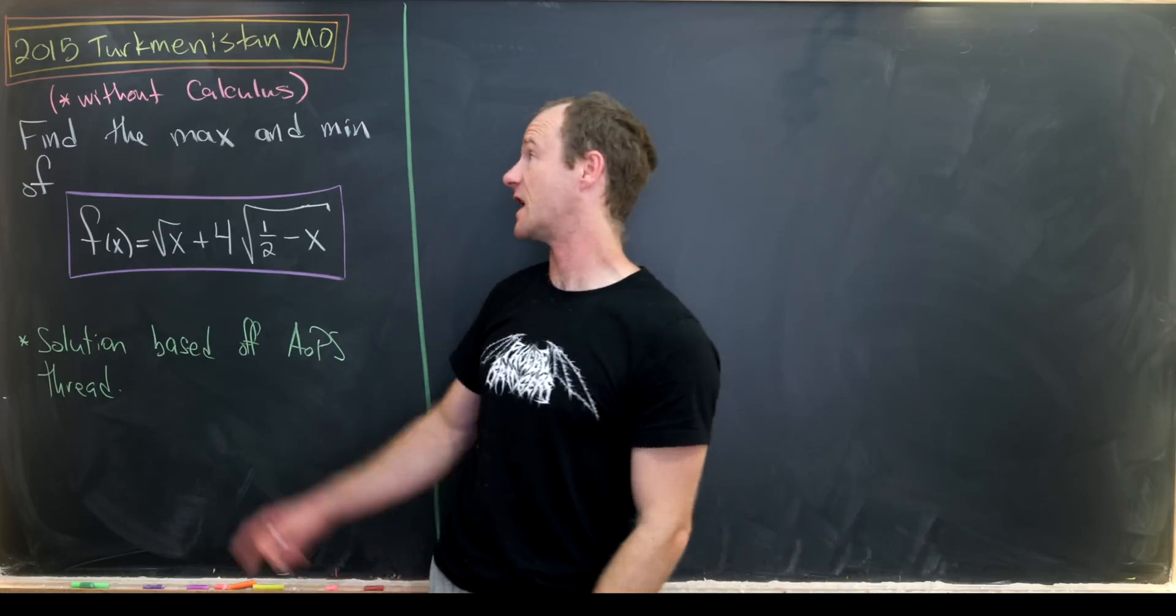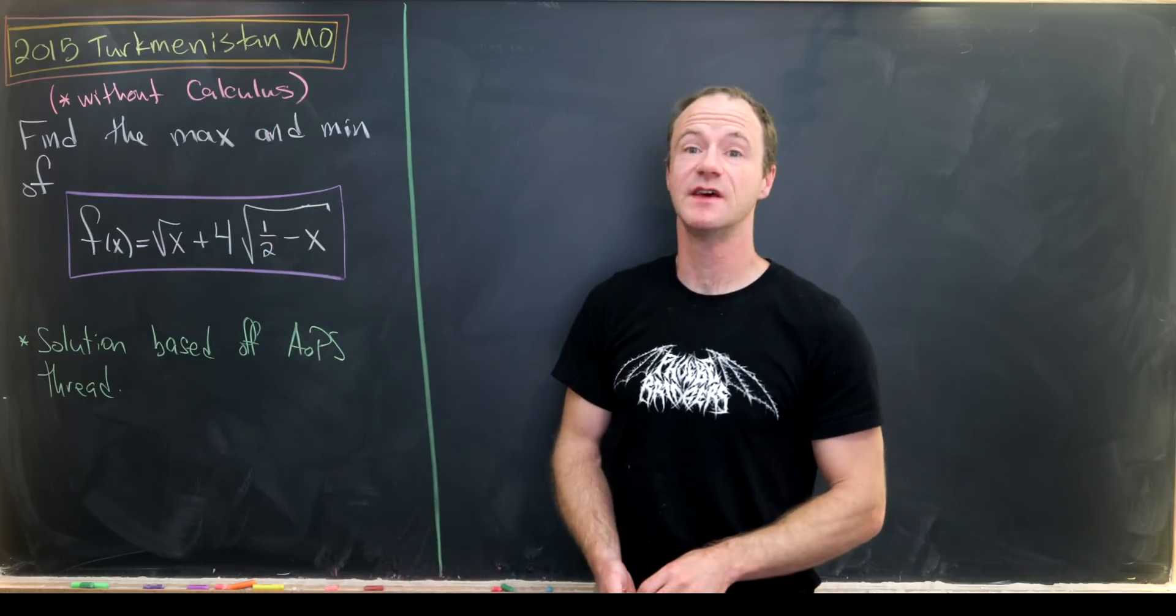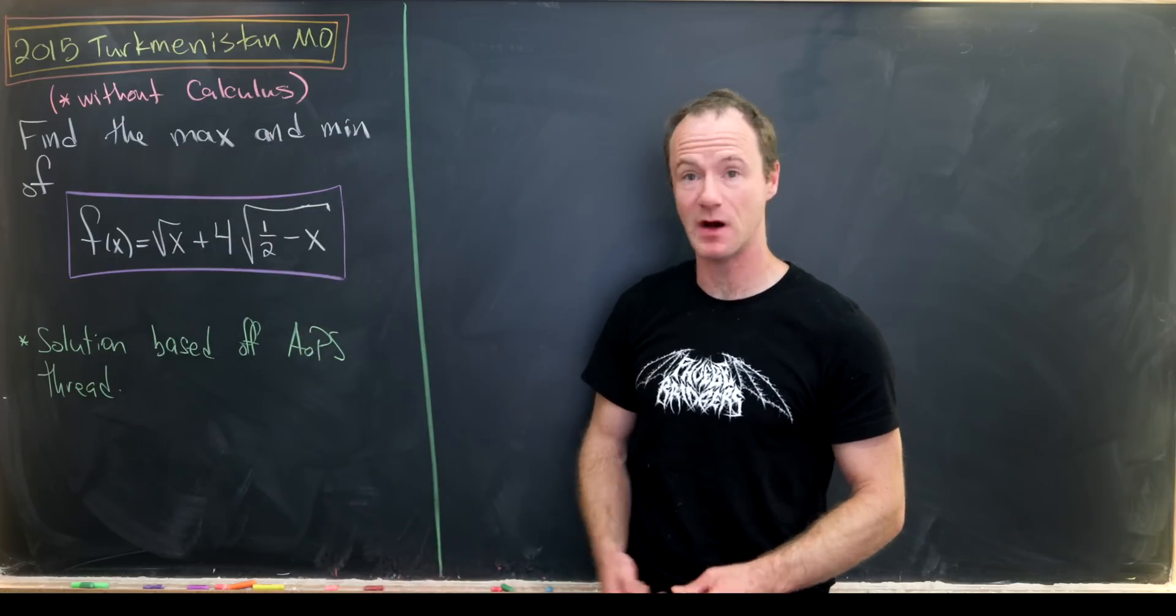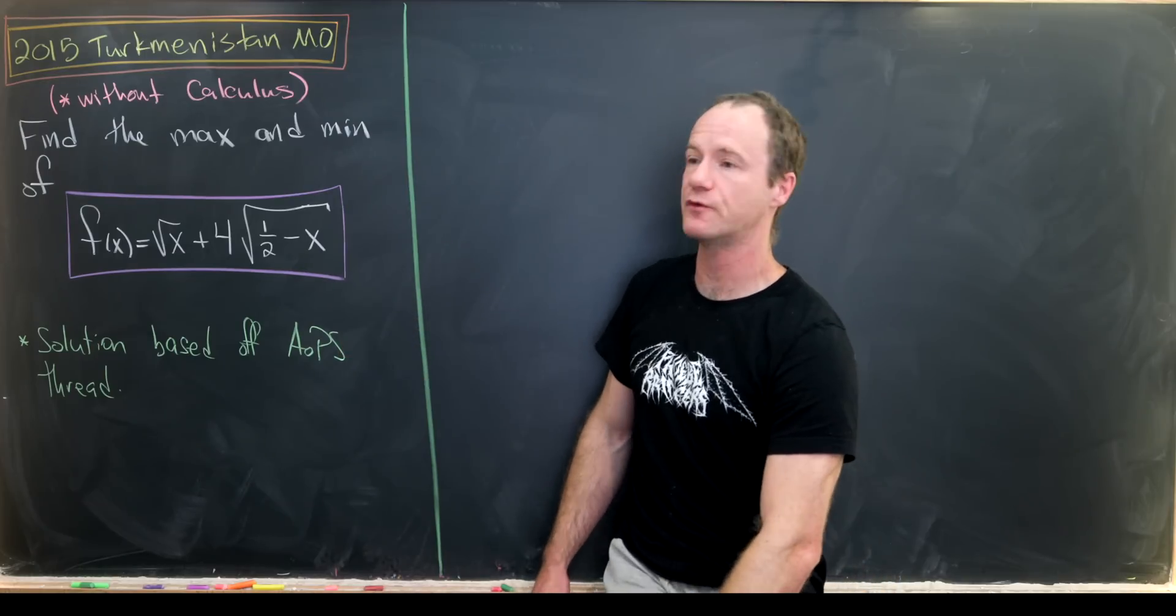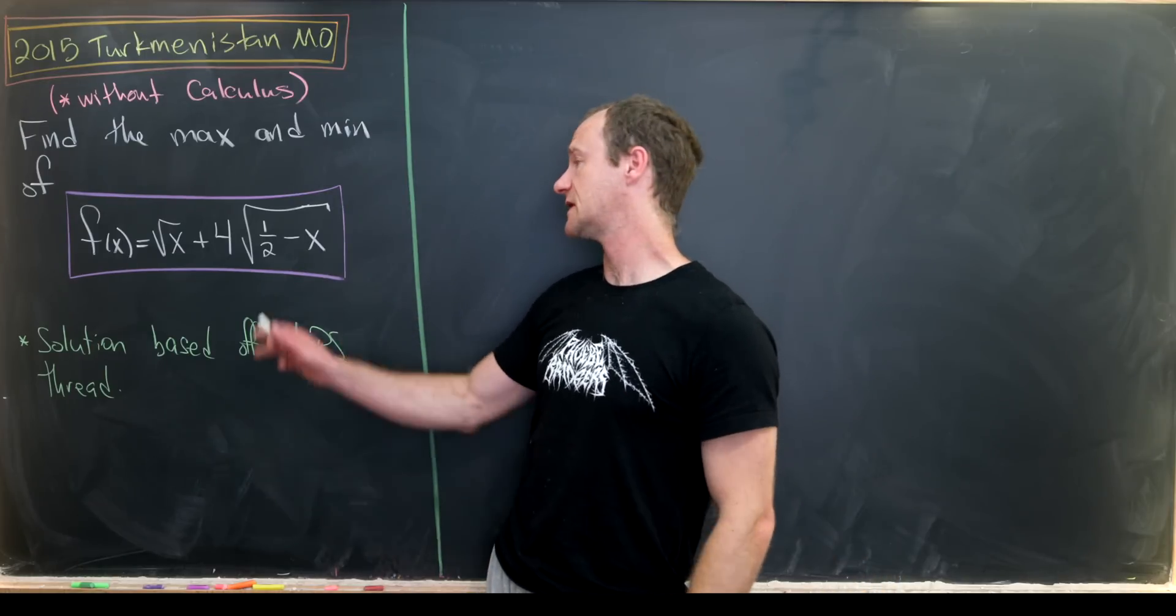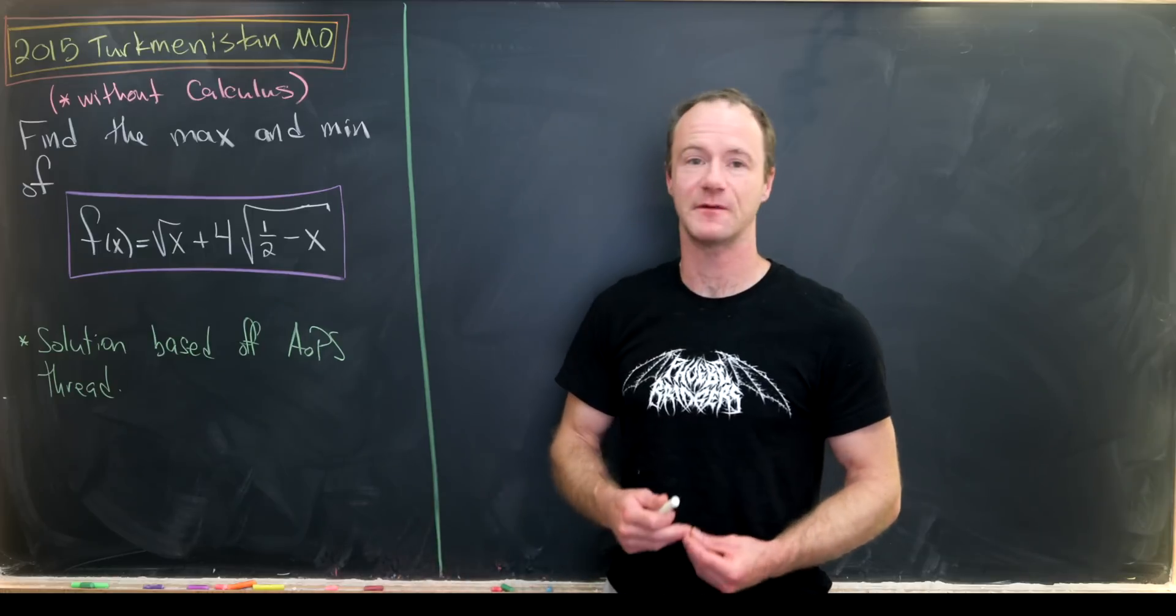So our goal is to find, without calculus, the maximum and minimum of this function. It's f of x equals the square root of x plus 4 times the square root of 1 half minus x.